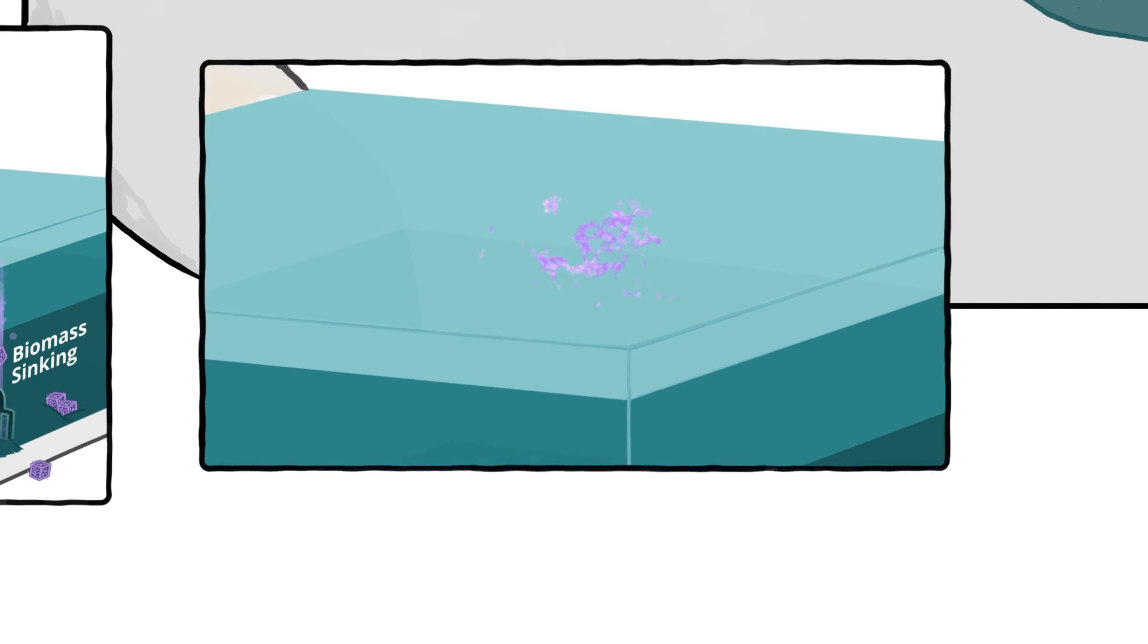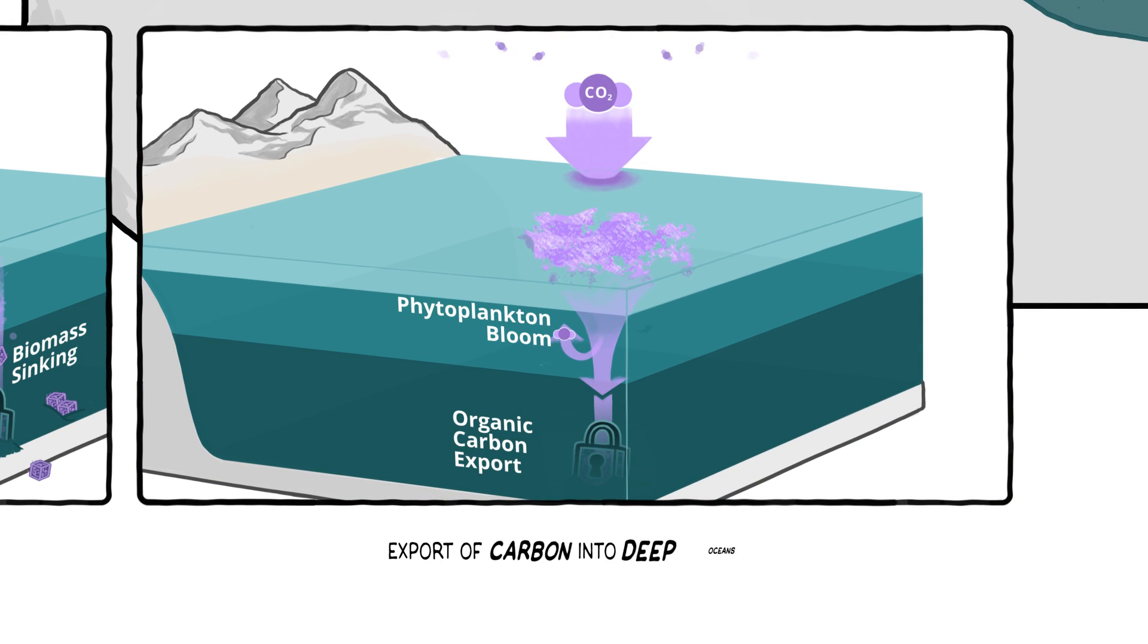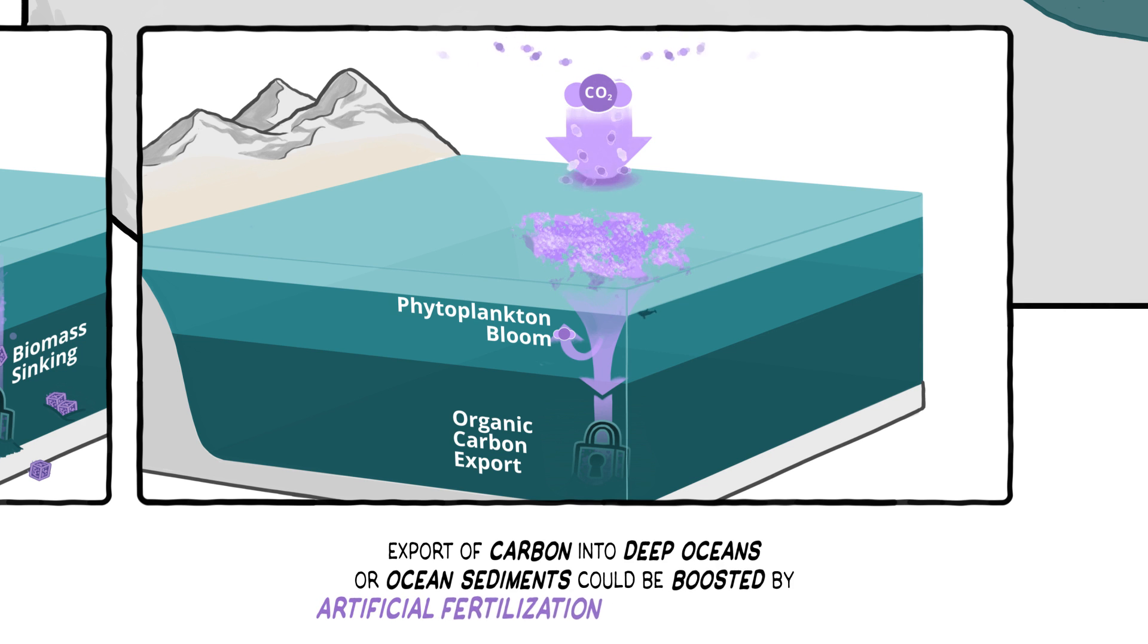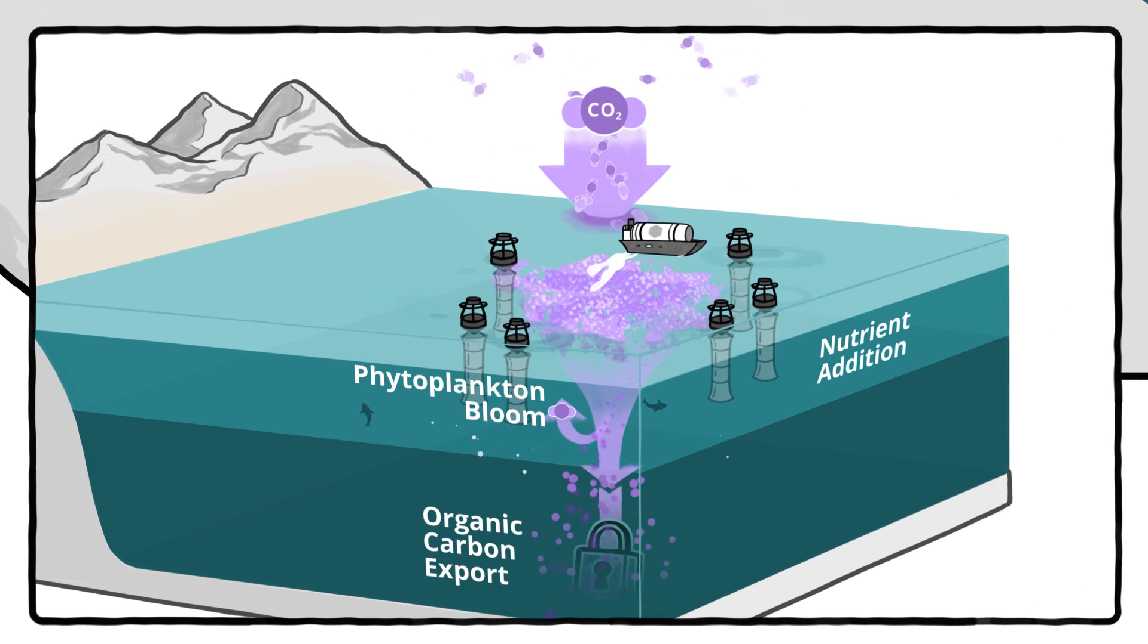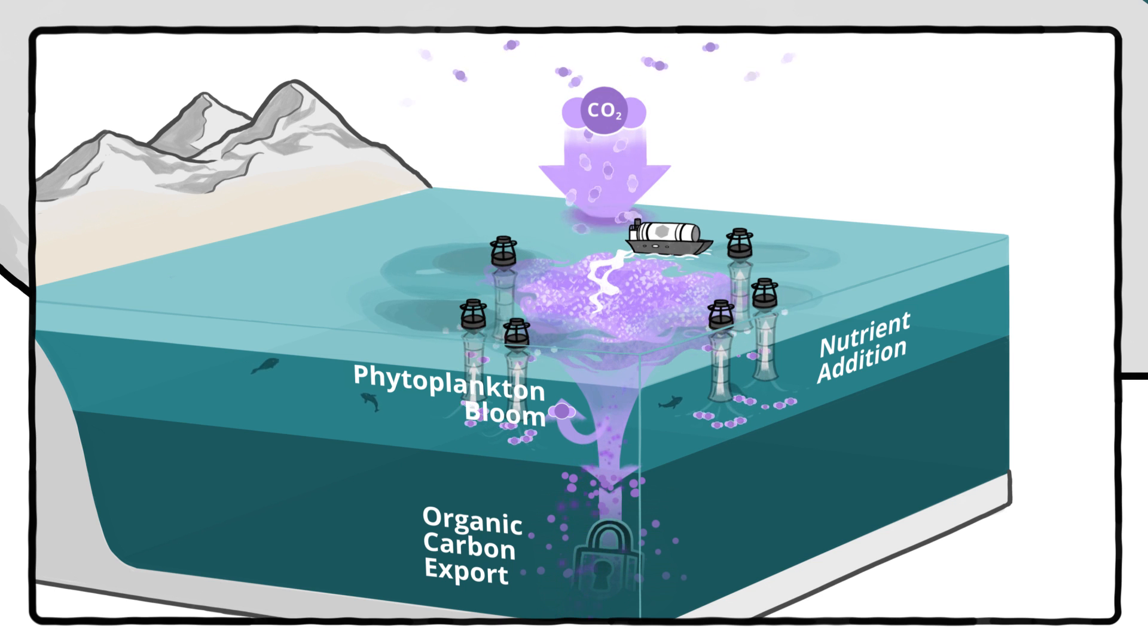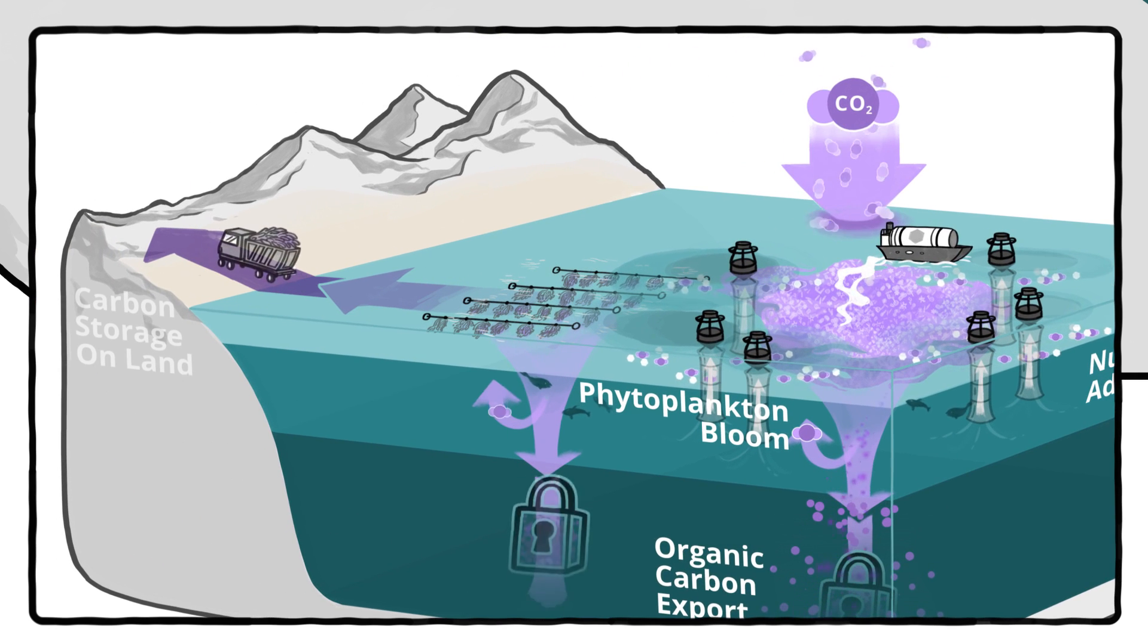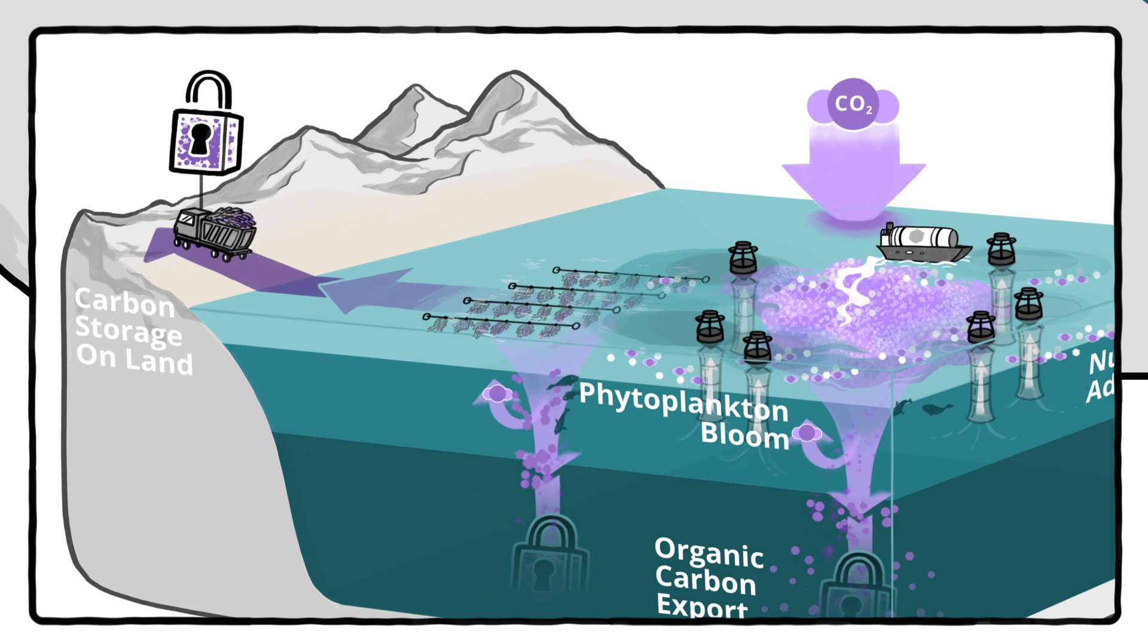In nutrient-poor waters, the export of carbon to the deep ocean could be boosted by artificial fertilisation of phytoplankton, either directly with the help of ships or planes, or by artificial upwelling of deeper nutrient-rich waters. Such fertilisation could also enhance the growth of seaweed.